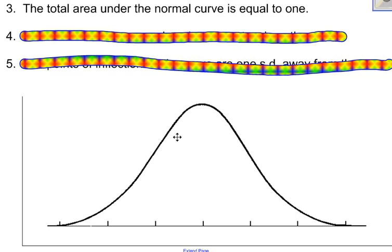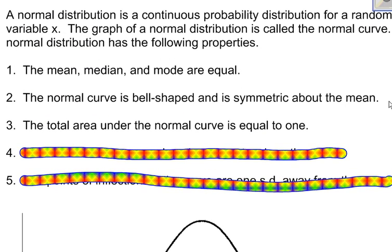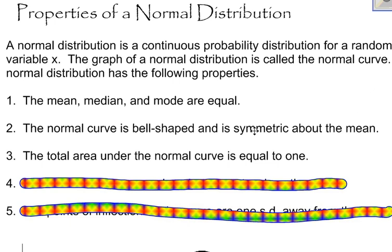the area under this curve represents probability, and the probability of an entire distribution is equal to one. So that's why the area under this curve is equal to one, because it represents probability of a distribution for a continuous random variable.